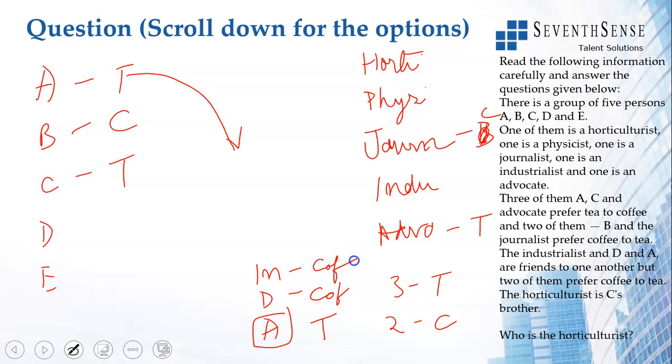Coffee, coffee. So D prefers coffee. And so the other Industrialist who prefers coffee is B. So B is the Industrialist.